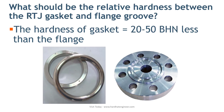What should be the relative hardness between the RTJ gasket and the flange groove? The material of the gasket should be soft enough to seat inside the flange groove to prevent leakage, but should not damage the flange face when you tighten the flange. To achieve this, a slightly softer gasket material is used compared to the flange material. The hardness of the gasket should be 20 to 50 BHN less than the hardness of the flange, ensuring smooth seating of the gasket in the flange groove.